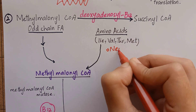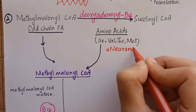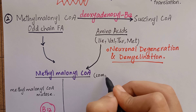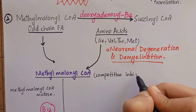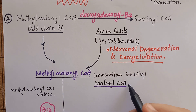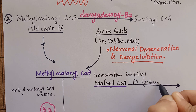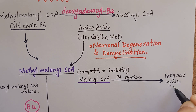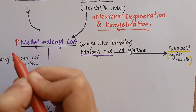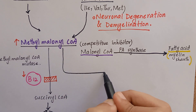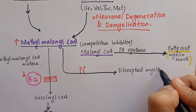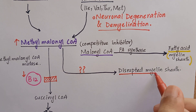Vitamin B12 deficiency is also associated with neuronal degeneration and demyelination of the nervous system. The mechanism is that methylmalonyl-CoA acts as a competitive inhibitor of malonyl-CoA. Malonyl-CoA is required for biosynthesis of fatty acids in the myelin sheath. Vitamin B12 deficiency causes accumulation of methylmalonyl-CoA, which substitutes malonyl-CoA in fatty acid synthesis, resulting in a new type of fatty acid that disrupts the normal membrane structure.